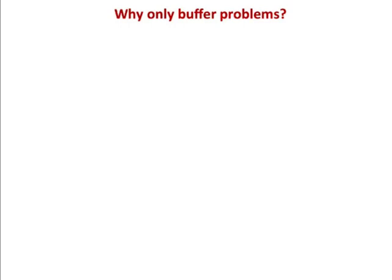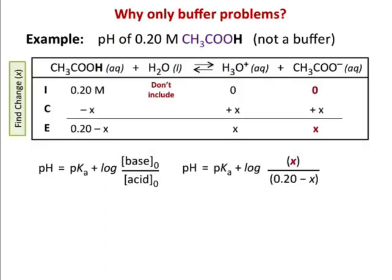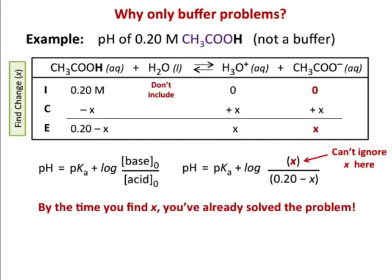So why does Henderson-Hasselbalch only work for buffer problems? Well, say you're trying to find the pH of just acid. Well, by the time you get down to it, the equilibrium numbers that go in here in the Henderson-Hasselbalch equation, the x is just hanging out by itself. You're multiplying by x. So you can't ignore it. So then you got to go find x to then plug it into this equation. And by the time you find x, you've already solved the problem. So it's not really worth it. It doesn't make sense to use this equation for a non-buffer problem.